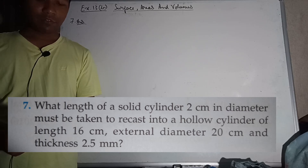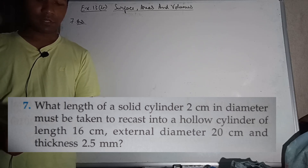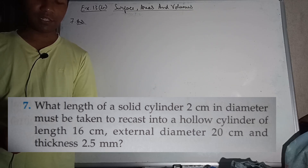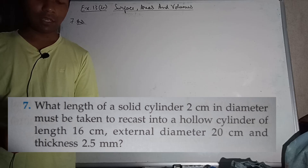What length of a solid cylinder 2cm in diameter must be taken to recast into a hollow cylinder of length 16cm, external diameter 20cm, and thickness 2.5mm?